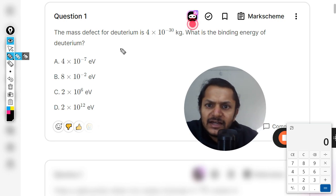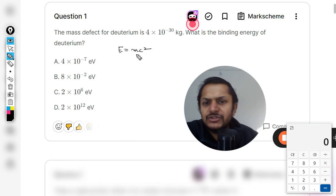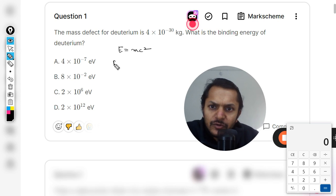We know that the famous relation given by Einstein is E = mc². This is the valid equation that we are going to apply, which can be written as the binding energy is equal to Δm × c².